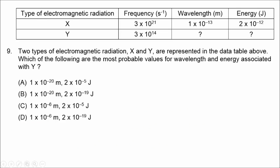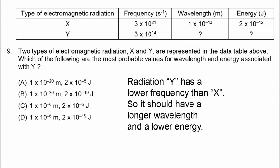In number 9, we have a form of electromagnetic radiation labeled Y with a lower frequency than X. Therefore it should have a longer wavelength and lower energy. A longer wavelength than 10 to the minus 13 meters would be 10 to the minus 6 meters, and a lower energy would be 2 times 10 to the negative 19 joules. The correct answer for number 9 is D.